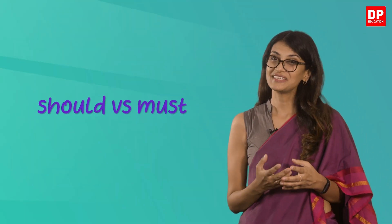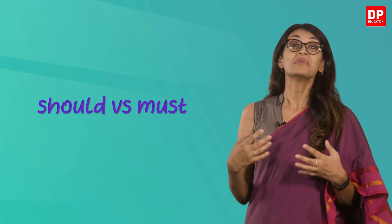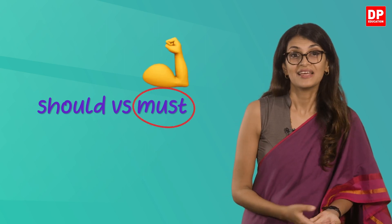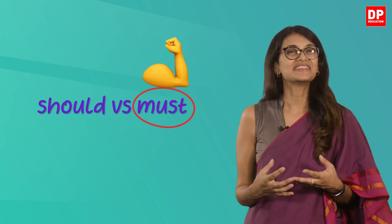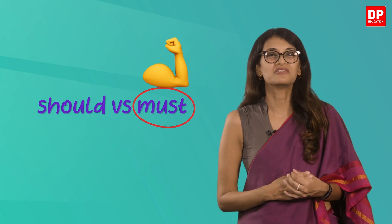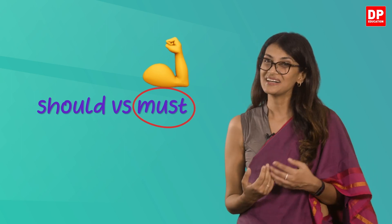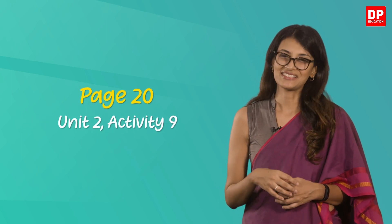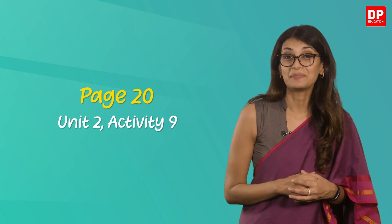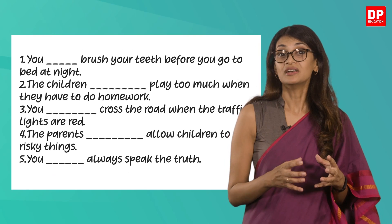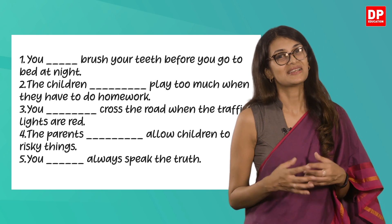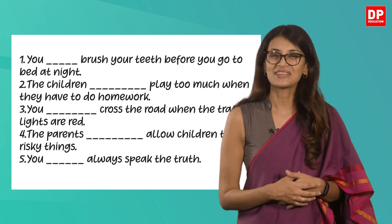So the main difference between the two words is that must is a stronger word. Now that you have a brief idea about when to use the modal verbs should and must, let's look at some exercises. Turn to page 20 in your pupils book, unit 2 activity 9. Complete the blanks using should, shouldn't, must, and mustn't. Let's do it together.